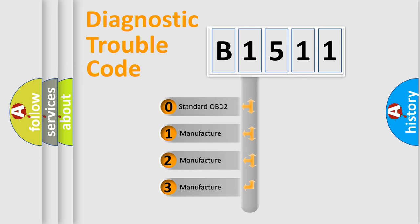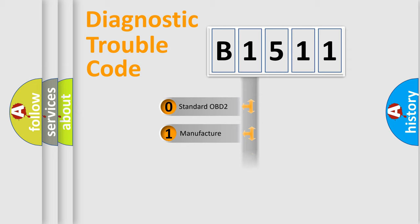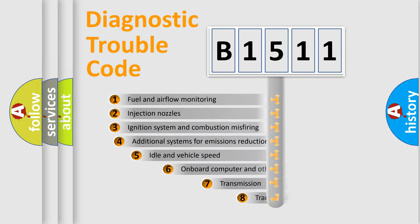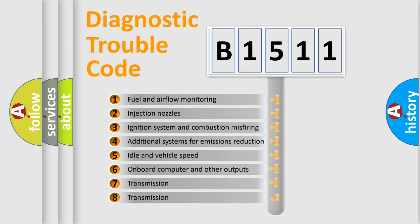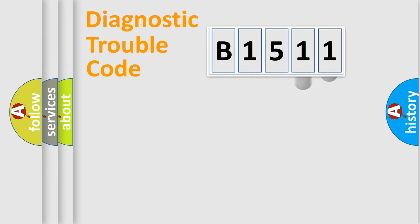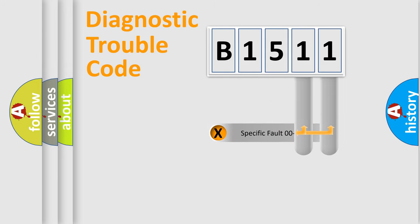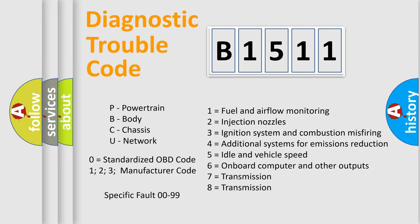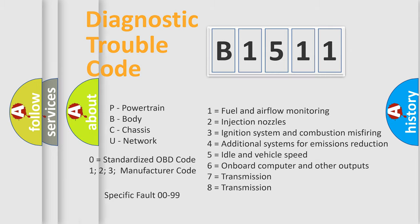If the second character is expressed as zero, it is a standardized error. In the case of numbers 1, 2, or 3, it is a more specific expression of a car-specific error. The third character specifies a subset of errors. This distribution is valid only for the standardized DTC code, and only the last two characters define the specific fault of the group. Such a division is valid only if the second character code is expressed by the number zero.